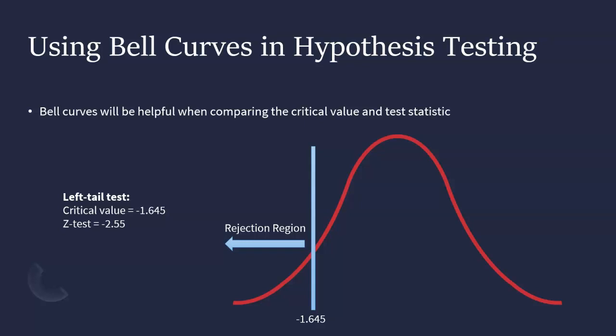So if your test statistic falls within that rejection region, that would tell us that we need to reject the null hypothesis.